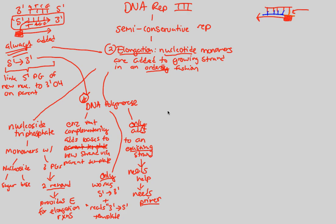So we're going to jump right back into our elongation discussion. We've established DNA polymerase, nucleoside triphosphates, and the 5' to 3' rule.